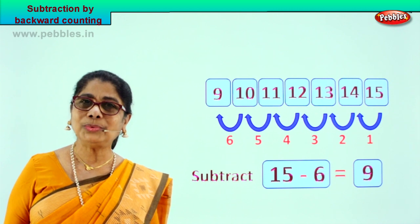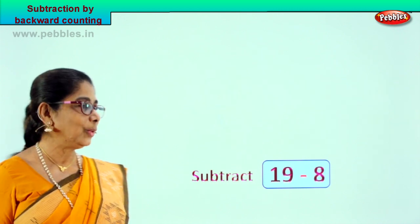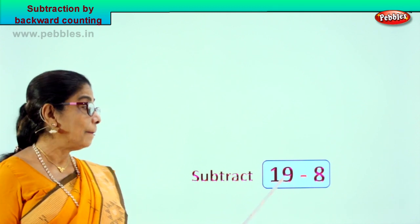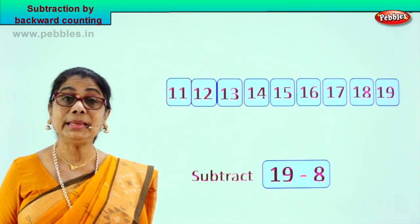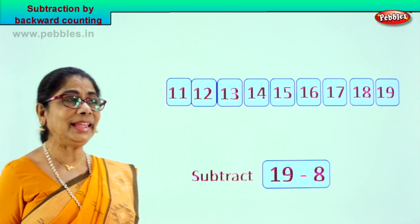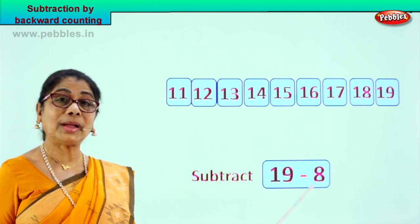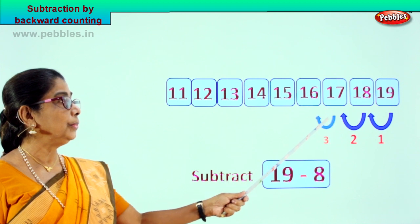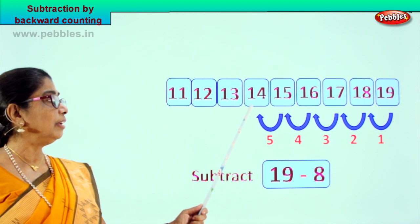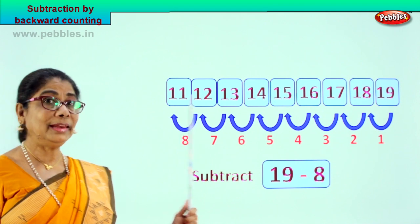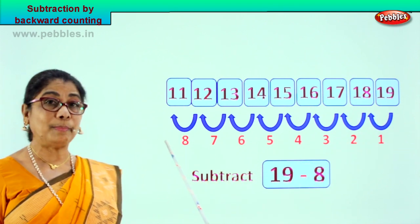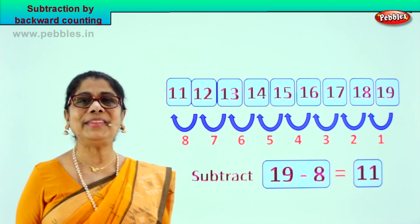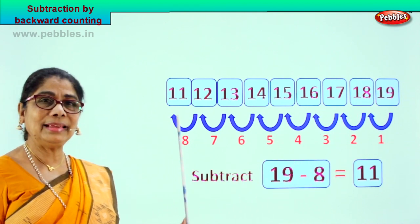Very good! Did you enjoy the backward counting? Shall we take another sum? We are supposed to subtract 19 minus 8. From 19 you will count 8 steps backward and derive at the answer. You have 19 here — come backward 8 steps. Let's count from 19: 1, 2, 3, 4, 5, 6, 7, 8. From 19 we counted 8 steps backward and got the answer. 19 minus 8 is equal to 11.